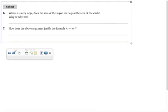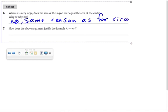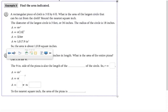So, when N is very large, does the area of the N-gon ever equal the area of the circle? No. Same reason as for circumference.